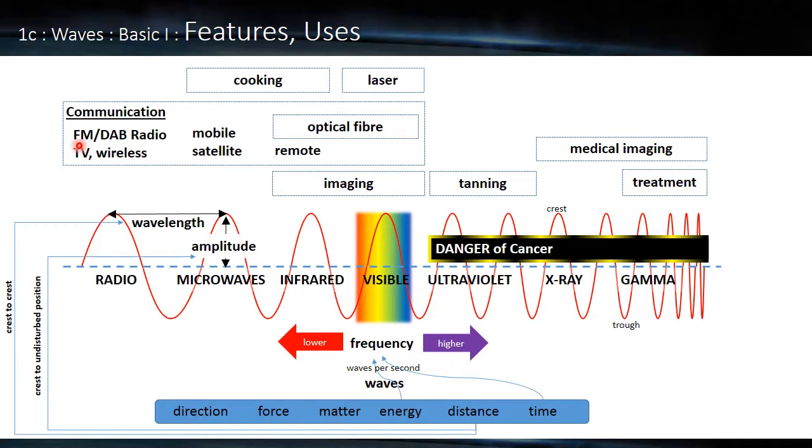So radio is used for, well as its name says, radio broadcast, and we've got the old fashioned FM or the more modern DAB, and the D stands for digital, which we'll talk about a little bit later on. We've also got TV signals that also use radio waves and also wireless, so using your router at home or in a cafe, we talk about wireless hotspots.